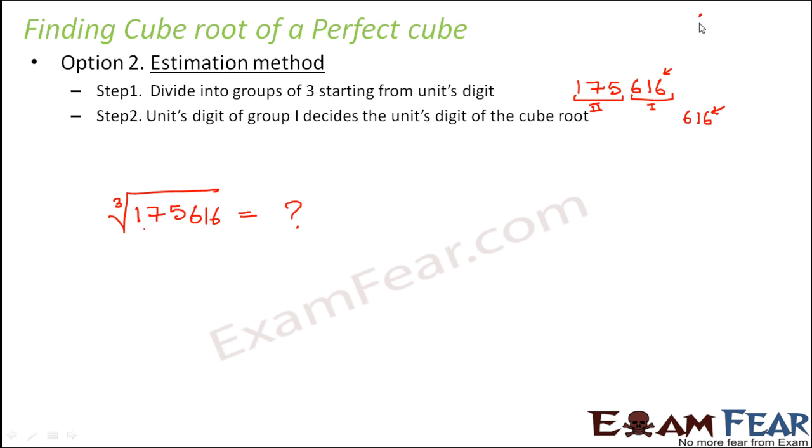We know that 6 cube is equal to 216. So any number ending with 6, its cube also ends with 6, right? So that means here the units digit is 6, therefore the units digit of the cube root would also be 6, perfect.